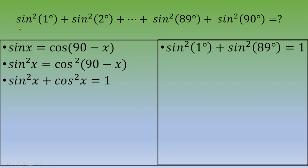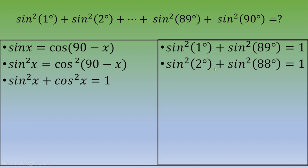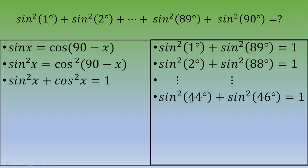Now we apply these three formulas to the exercise. We pair sine squared 1° with sine squared 89°: since sine squared 1° = cosine squared 89°, their sum equals 1. Similarly, sine squared 2° + sine squared 88° = 1, and so on and so forth, until sine squared 44° + sine squared 46° = 1.